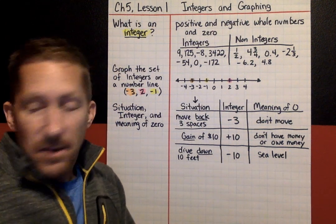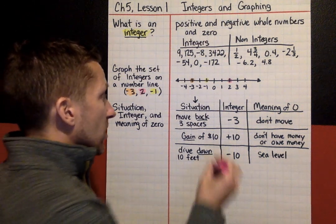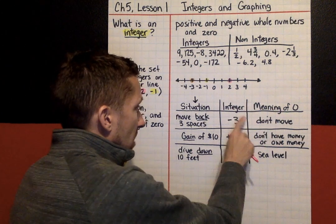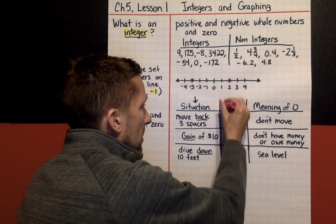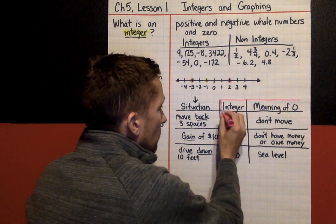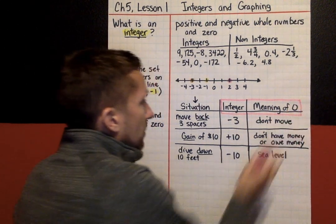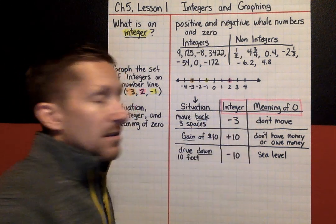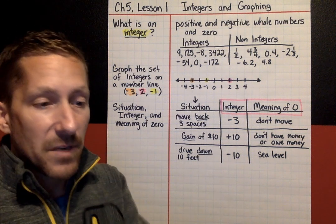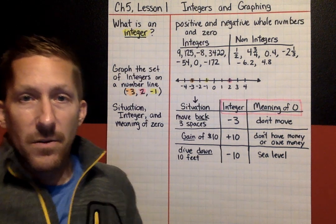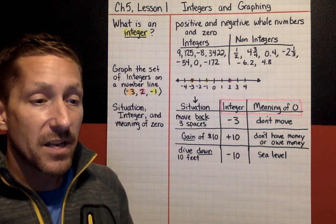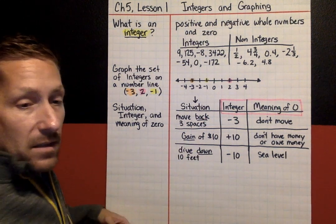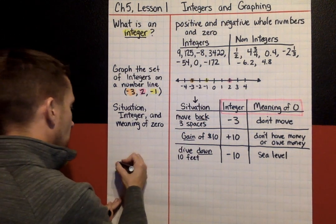Today your work includes graphing practice problems and situation problems. You will be doing two things: finding the integer that represents the situation, and describing the meaning of zero in that situation. The last thing I want you to take notes on is key words for integers, because vocabulary like 'back,' 'gain,' and 'down' is very important.